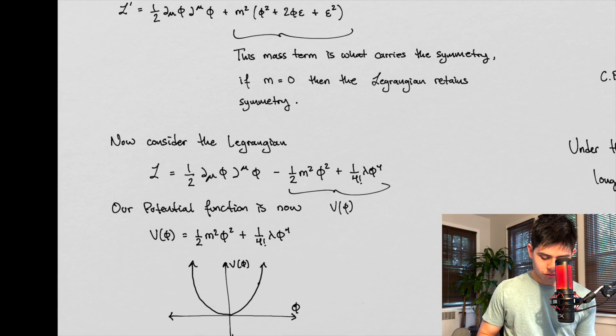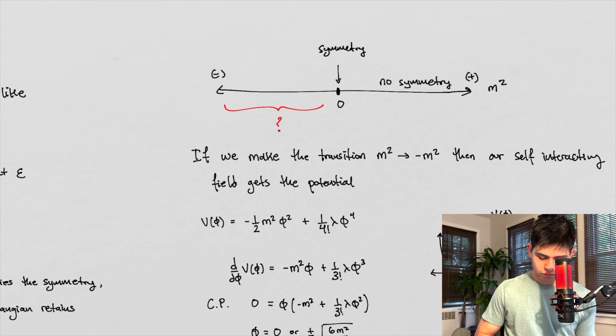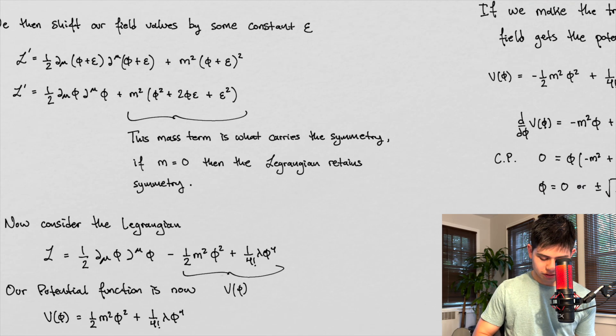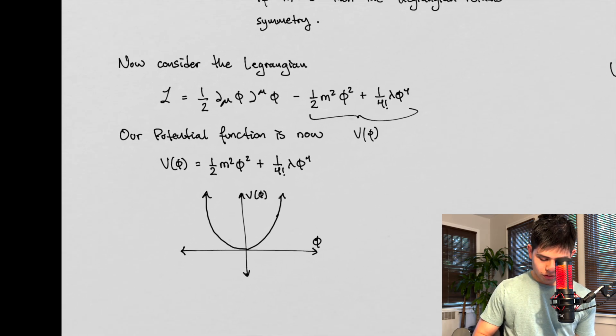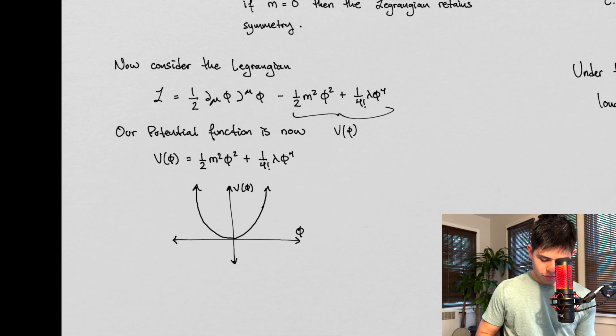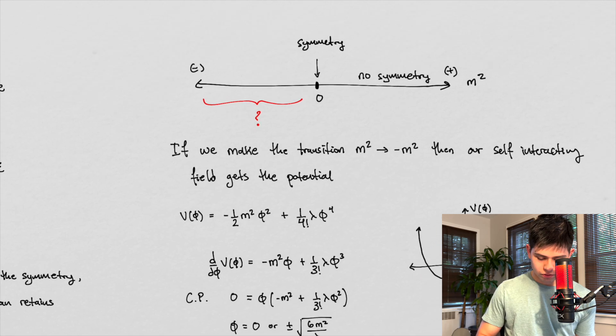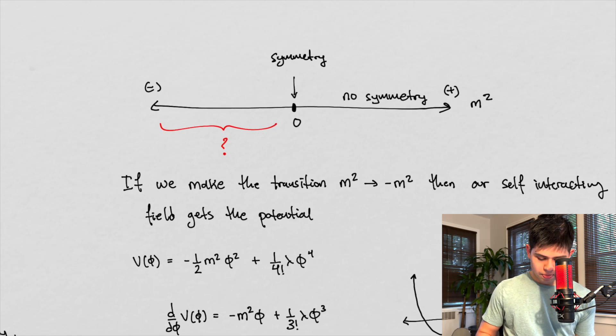All right, so now, so let's think of something here. So we have this mass term. If we come up here now, so the idea here is that when the mass was zero, the mass is zero, we had, if the mass is zero, then there's symmetry.